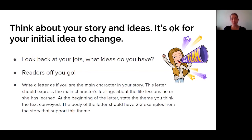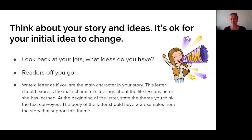For your activity today, I want you to write a letter as if you are the main character of your story. This letter should express the main character's feelings about the life lessons he or she has learned. At the beginning of the letter, state the theme you think the text has conveyed — what do you think this story is about? The body of the letter should have two to three examples from the story that support this theme. Think about what your story is all about, what's the lesson, and jot down some ideas or examples, just like we did earlier. Think about your story and your character's actions. Always remember that after you pause to grow big ideas about a text, if your book continues to give up lots of ideas, one of your jobs will be to examine those new ideas through the lens of your initial idea — and that initial idea may change. Perhaps you'll add more to it. All right, boys and girls, it's been awesome teaching these past couple of weeks.